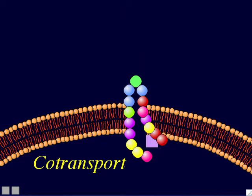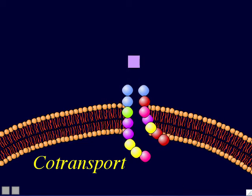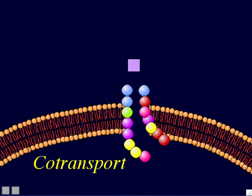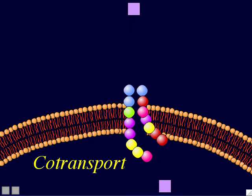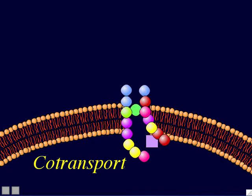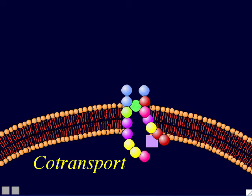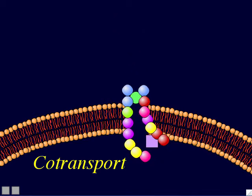One last thing about co-transport: in some types, one solute exits the cell while one enters. In other types, both molecules move into the cell, or both exit the cell. Co-transport just means the channel protein binds to and transports two different solute molecule types simultaneously. It doesn't necessarily specify the direction — all those variations are different possibilities for co-transport.